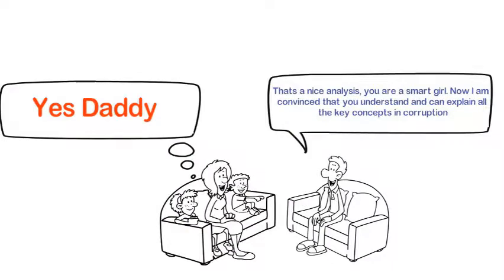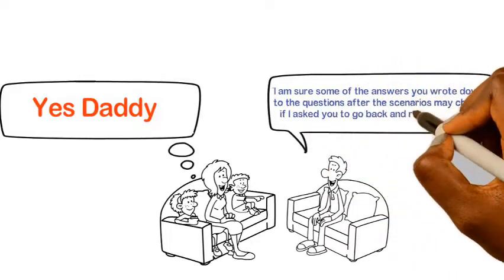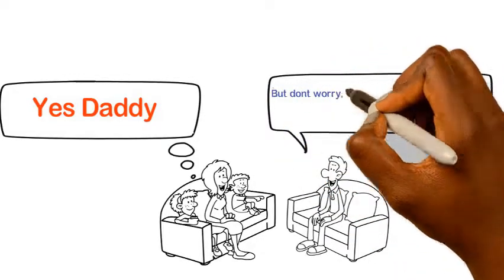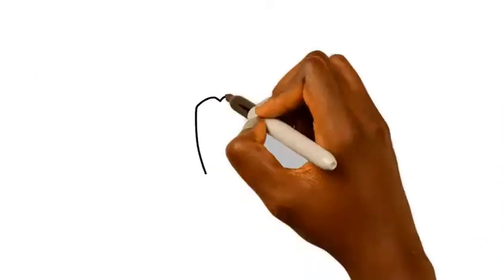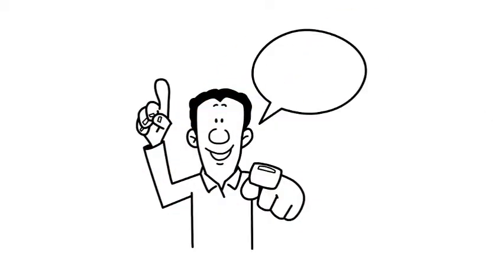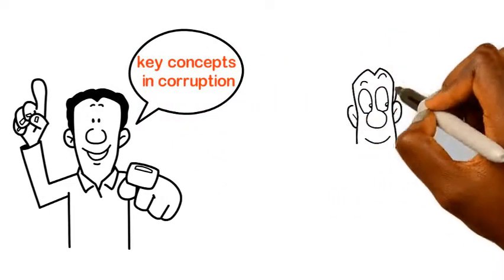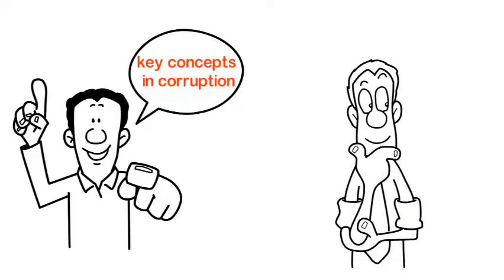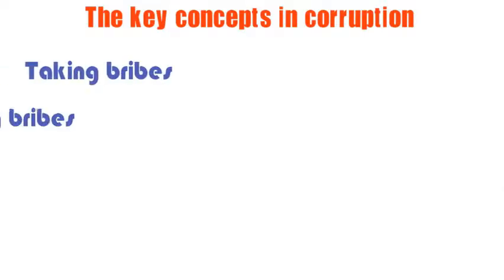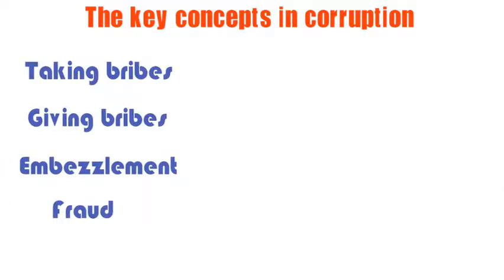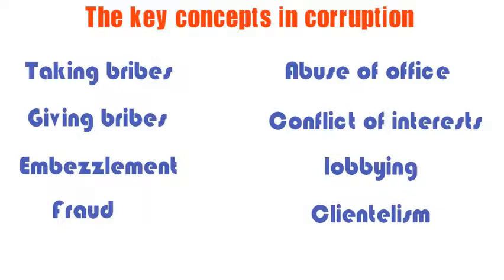I'm sure some of your answers may change if I ask you to go back and re-answer them. But the most important thing is that you understand what corruption is. The key concepts in corruption are: taking bribes, giving bribes, embezzlement, fraud, abuse of office, conflict of interests, lobbying, clientelism and nepotism.